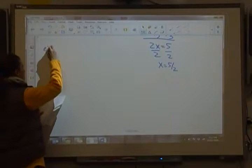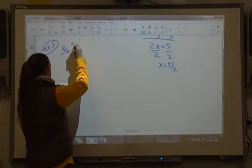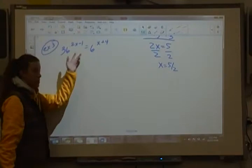Let's take a look at another one. So if I have one where I have 36 to the 2x minus 1 is equal to 6 to the x plus 4.